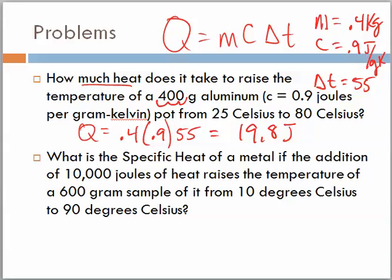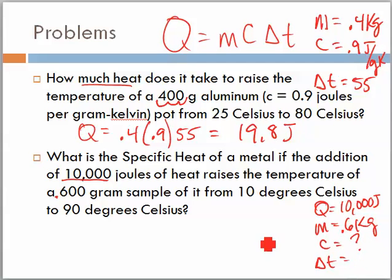All right. We're back. If I were to list these off here, in this case, they tell me that Q is 10,000 joules of heat or energy. They give me the mass, that's 0.6 kilograms. The specific heat, in this case, is what we want to find. And the change in temperature is 90 to 10 or 80.